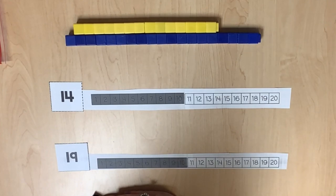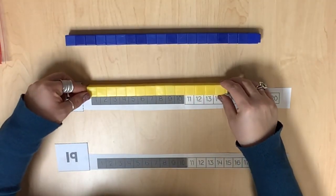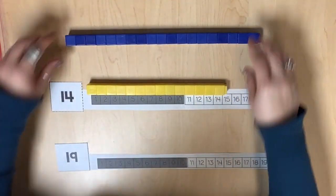Using sets of linking cubes, we can begin by representing each of the quantities. Each linking cube corresponds to a space on the number path.